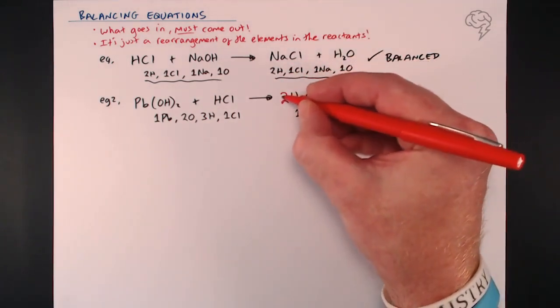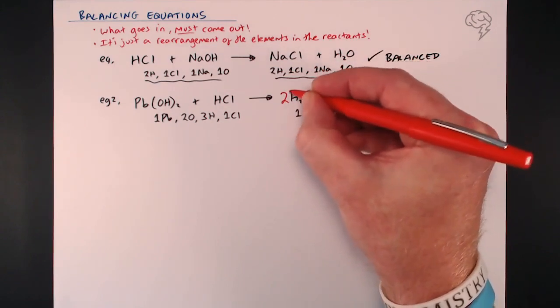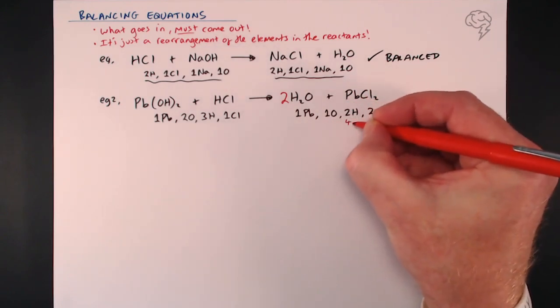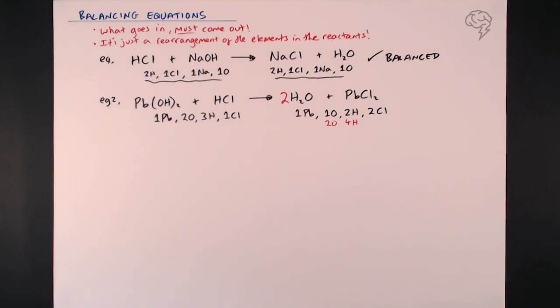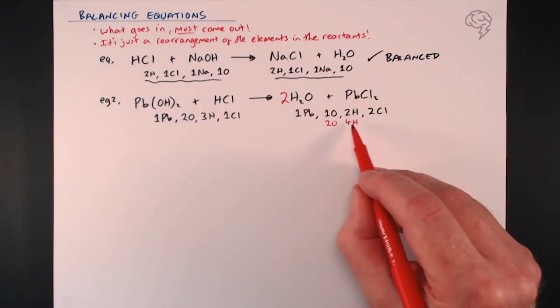What that does is it doubles everything behind, so this H2O - now we've now got four hydrogen and two oxygen there. So I'm going to put four hydrogen there and two oxygen - that's the new amount that we've got now I've put that two there.